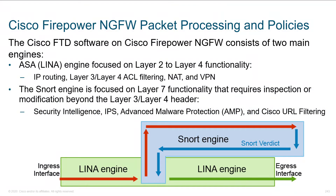This is a whole lot cleaner than the picture I was trying to draw with my pen, introducing the concept of the ASA Lena engine. To show what came before this, we had the ASA product. Think about the old 5500 ASAs — about a generation ago. If you wanted to do IPS, you'd dedicate a hardware module: basically a LAN card with an Intel processor, a stick of RAM, a hard drive — another computer with its own resources plugged into the ASA, communicating through the backplane.